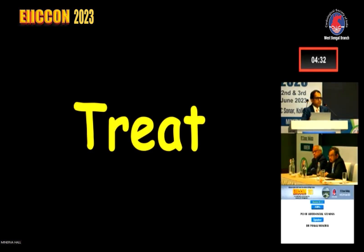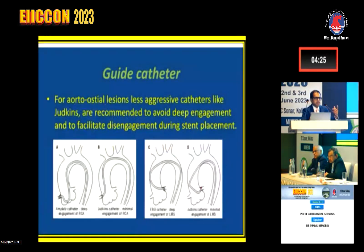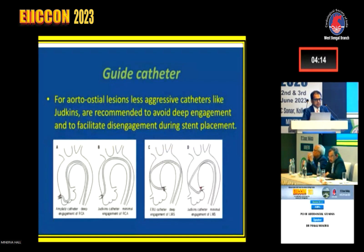Finally, when it comes to treating these lesions — the main issue is selection of guide catheters. For aorto-ostial lesions, less aggressive guide catheters like Judkins are recommended to avoid deep engagement. It also helps us in disengaging the guide during stent implantation. Using a backup guide may damage the ostium further, may cause ventricularization, and pulling and pushing backup guides is not easy. The best guide is to use Judkins guides in these aorto-ostial lesions.